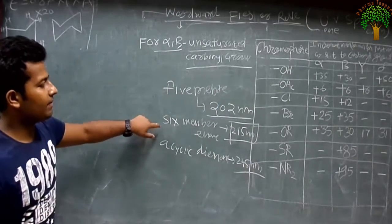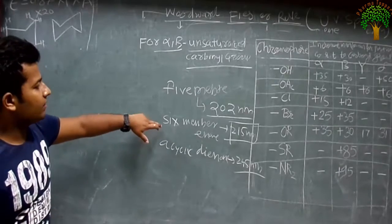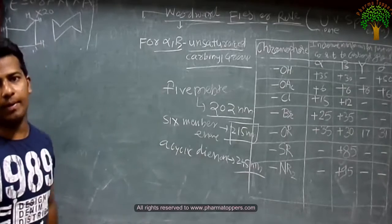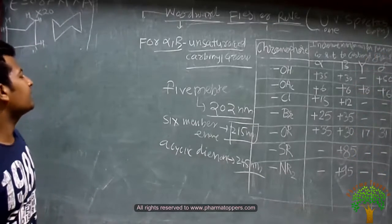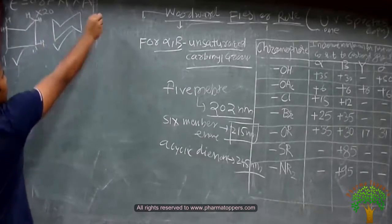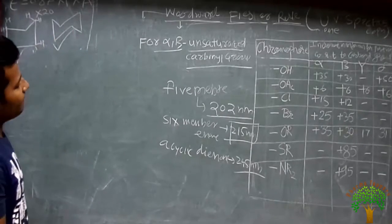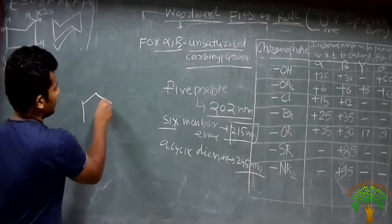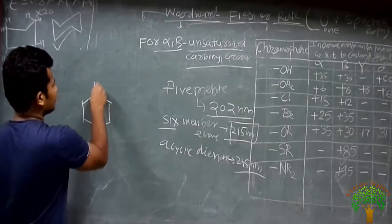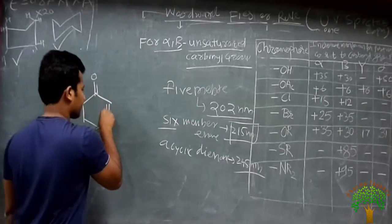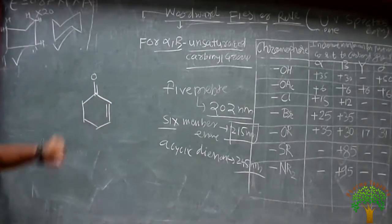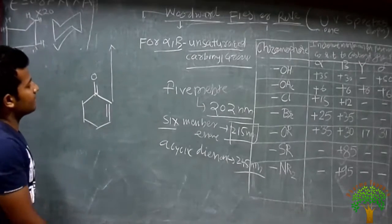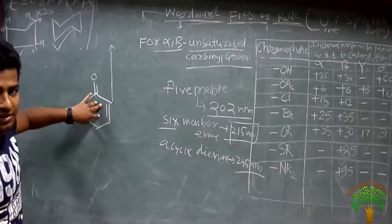Why does the six-membered ring enone have a higher lambda max? Six-membered ring enones and aliphatic analogs have a higher lambda max than the five-membered ring. The reason for this involves two structures. Six-membered rings, like cyclohexenone, are in the ground state. When they go into the excited state, they convert into different structures.